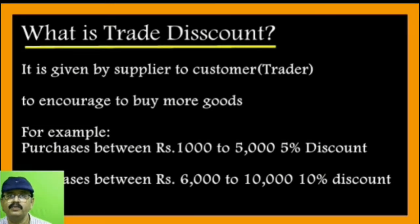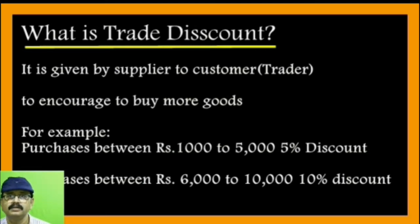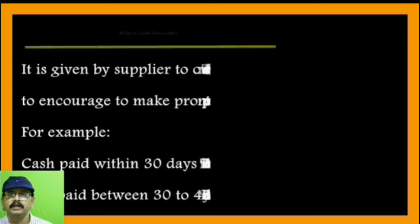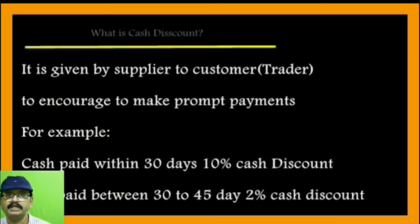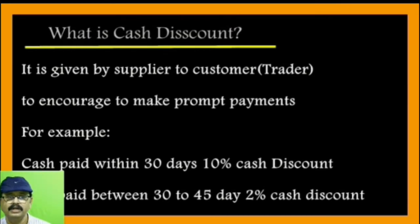When goods are sold on credit or purchased on credit, the trade discount will be offered by the supplier to encourage buying more goods. The second type is cash discount. What is cash discount? It is given by the supplier to the customer or trader to encourage prompt payments.